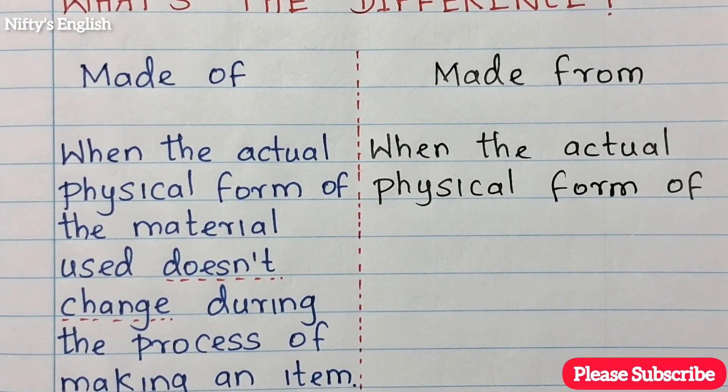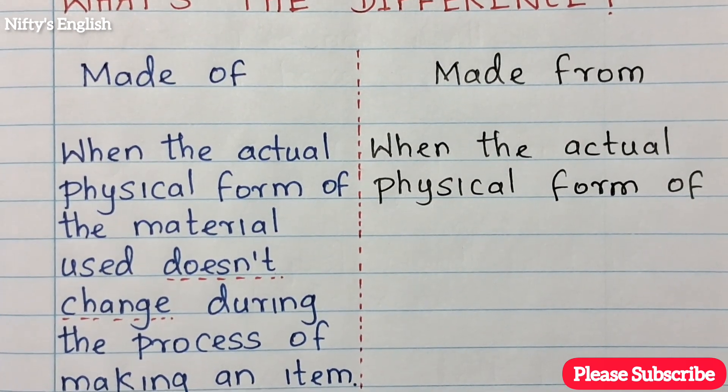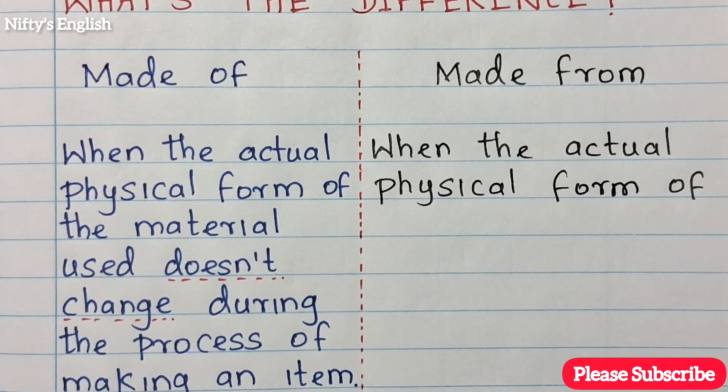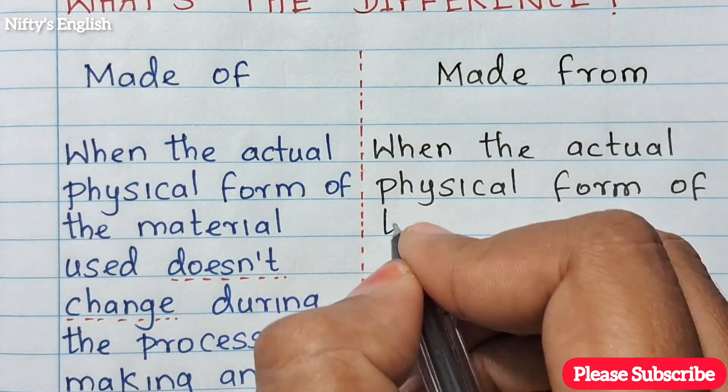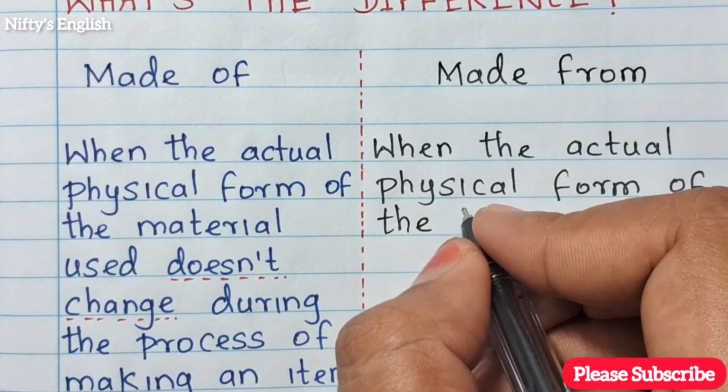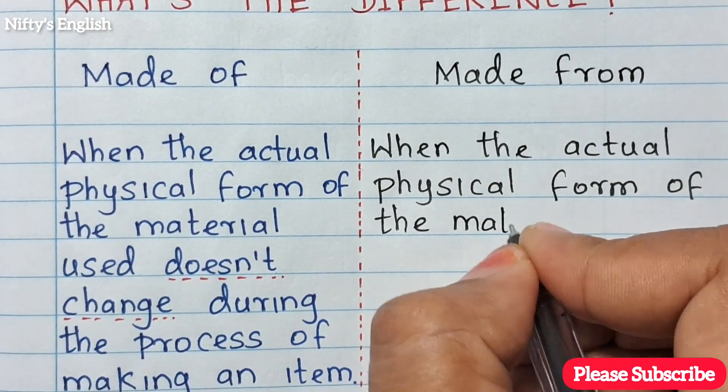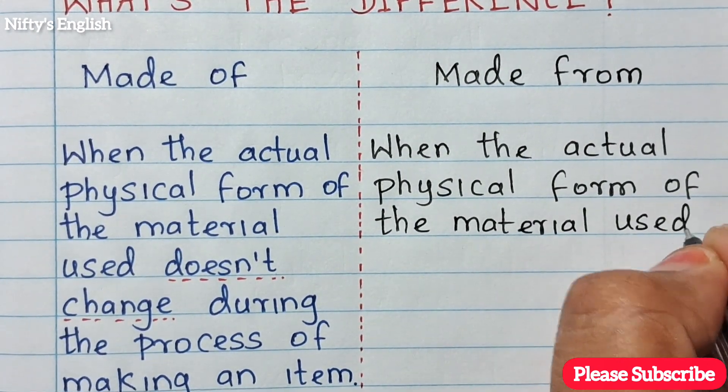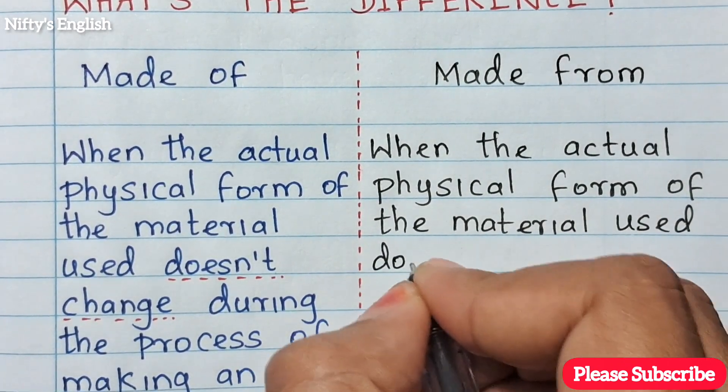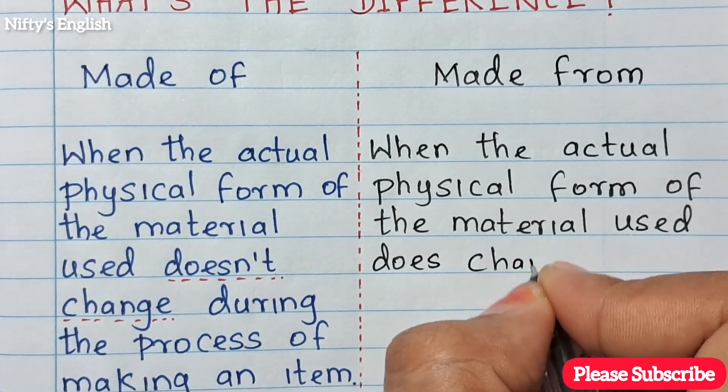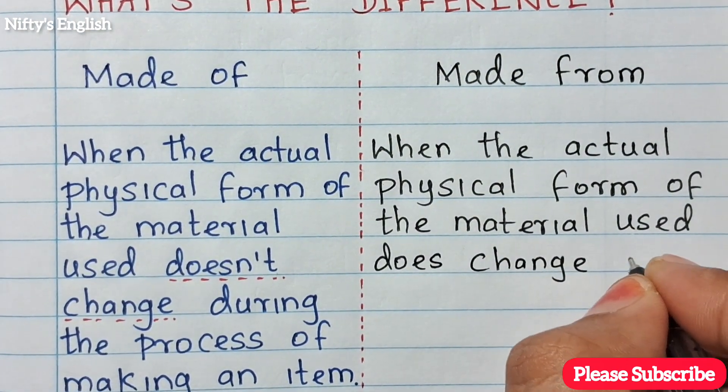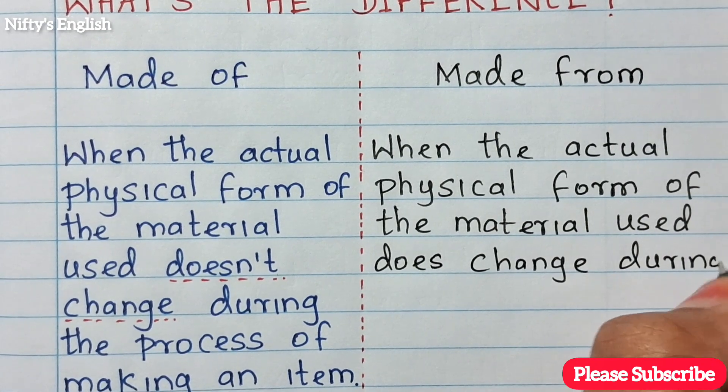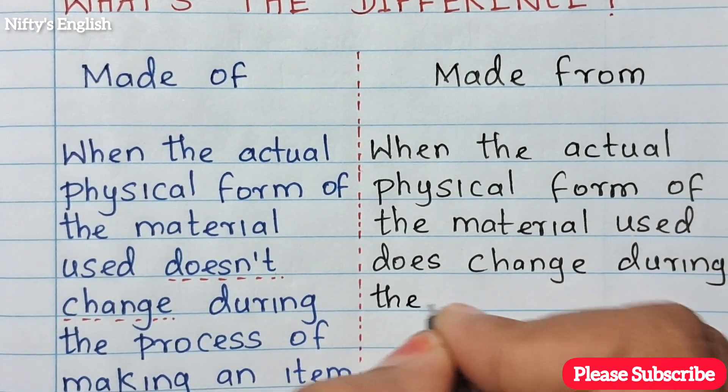Next one is made from. The definition: the actual physical form of the material used does not change during the process of making an item.